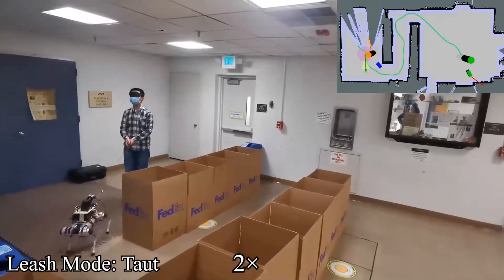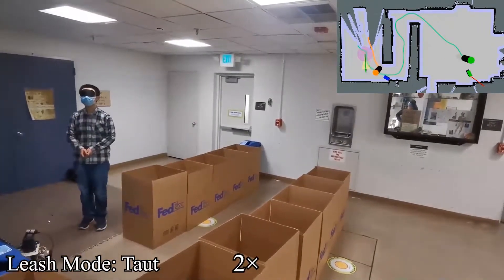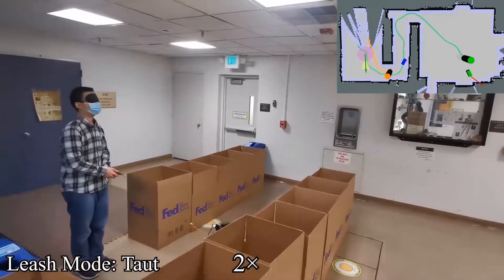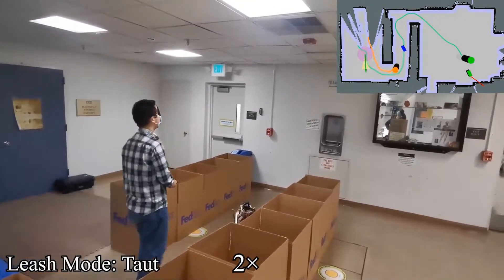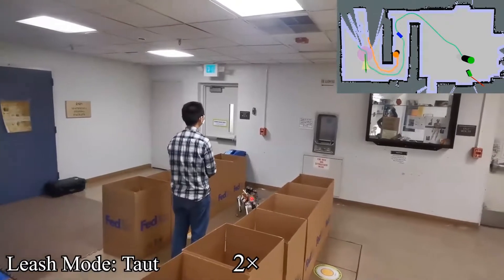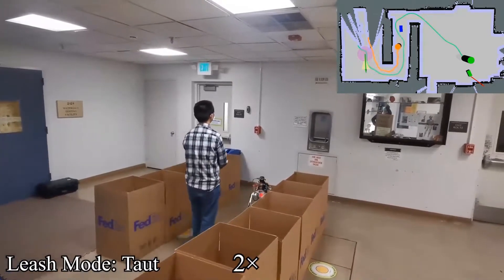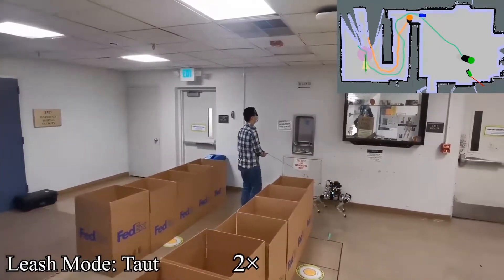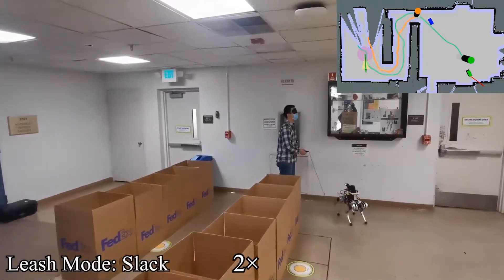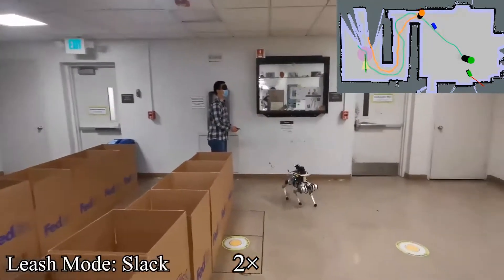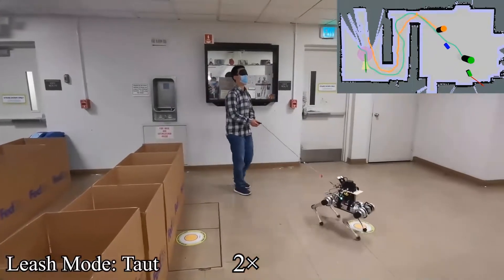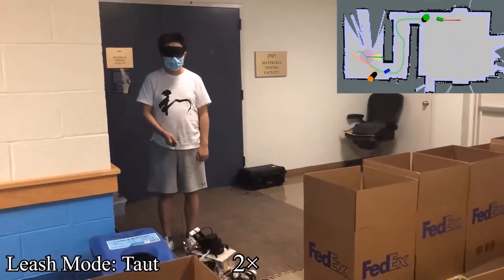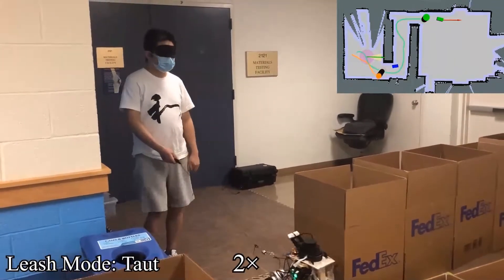We also test the system starting from different initial poses. Such taut slack switching may happen many times during the navigation. The tightest space in this experiment setup is about 1 meter, while the human-robot separation is about 1.6 meter when the leash is taut. We also test and validate our system on multiple human subjects without training or teaching the human how to use the robot.